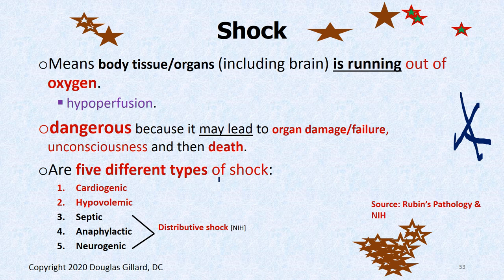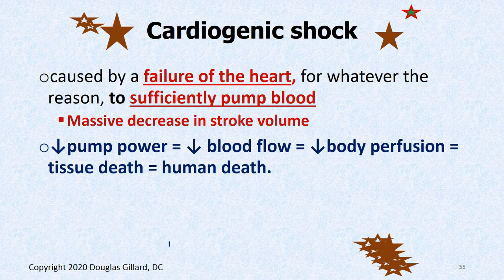There are five different types according to the board books: cardiogenic shock — the heart is the problem; hypovolemic shock; septic shock; anaphylactic shock; and neurogenic shock. Septic, anaphylactic, and neurogenic are clumped under a category called distributive shock. Let's look at cardiogenic shock — it's caused by a failure of the heart to eject blood out sufficiently and efficiently perfuse the body. The heart as a pump is not working. You get a massive decrease in stroke volume and there goes your perfusion.